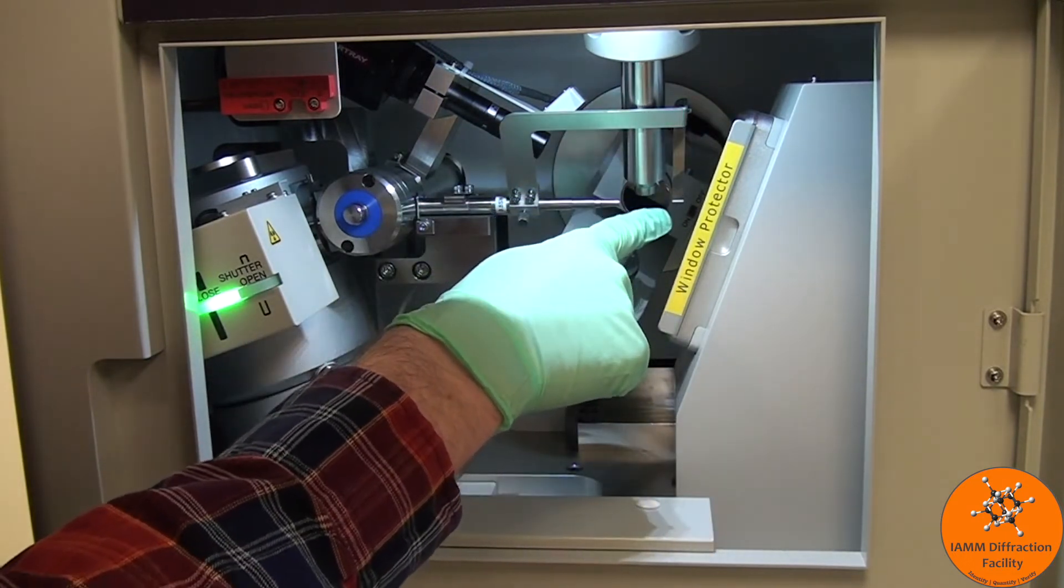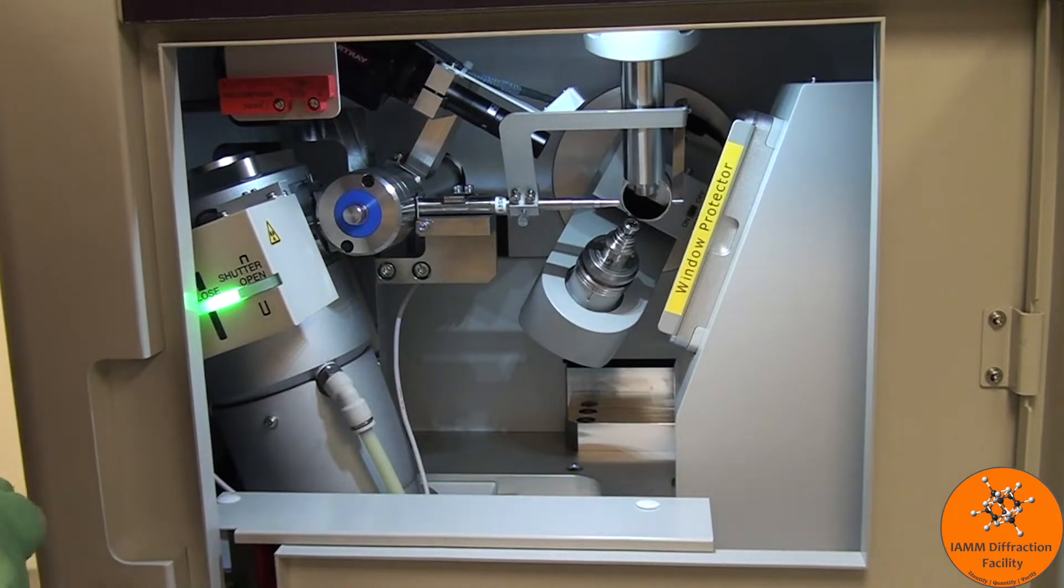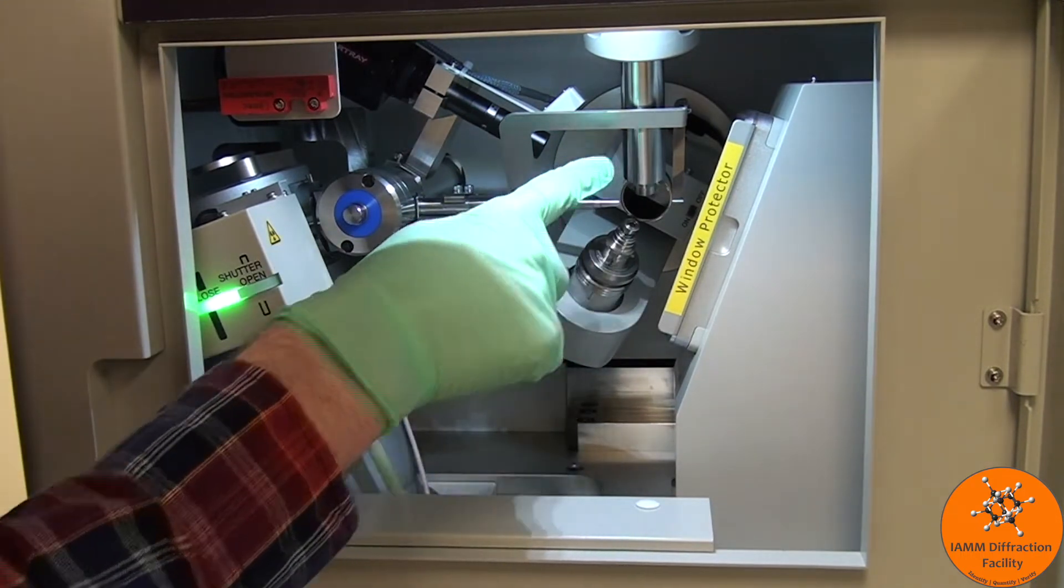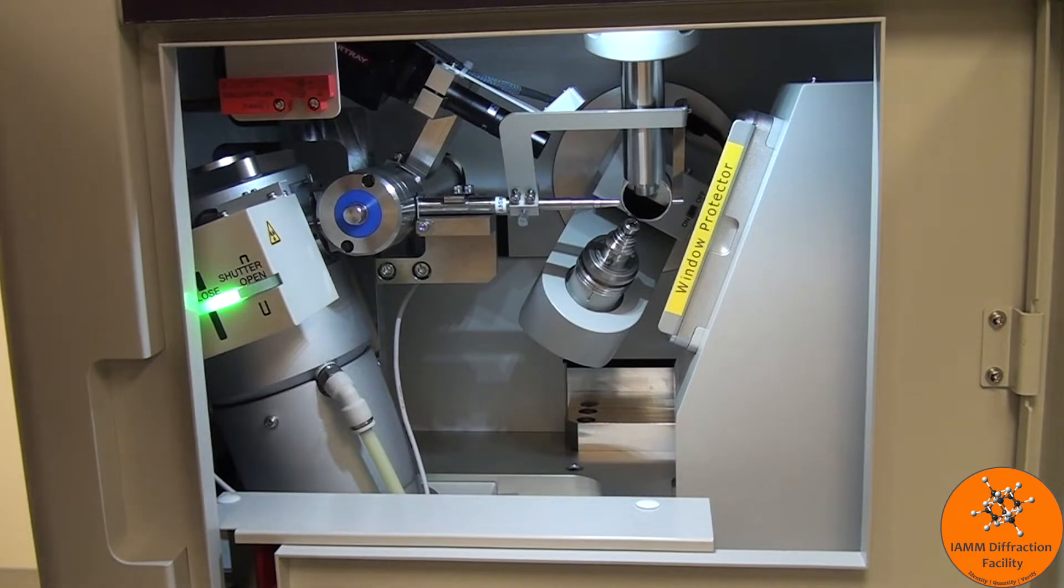This right here goes to the beam stop so that we don't shoot the x-rays directly into the detector. This right here is the nozzle for the nitrogen gas that allows us to cool our system down to 100 Kelvin.